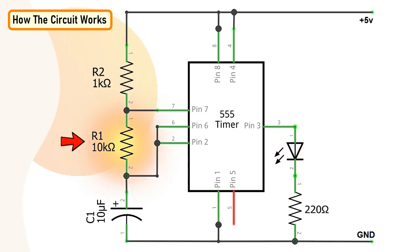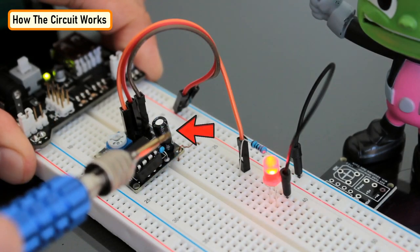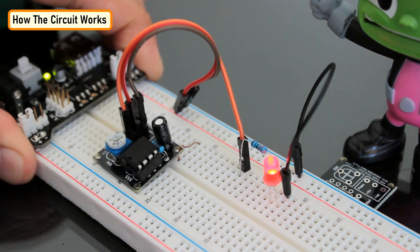Since resistance R1 is involved in both charging and discharging of the capacitor, increasing or decreasing its value will increase or decrease the duration of the off cycle and will decrease or increase the flashing rate of the LED. As the capacitor will take more time to charge and discharge.